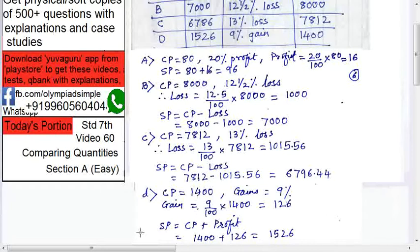So selling price equals cost price plus profit. So 1400 plus 126, 1526, that is correct. So C is the only answer which is not correct.